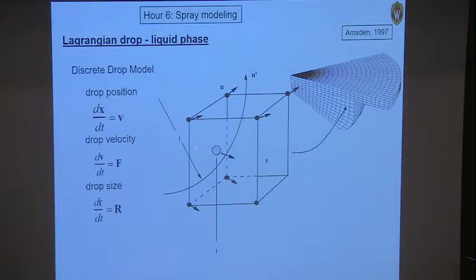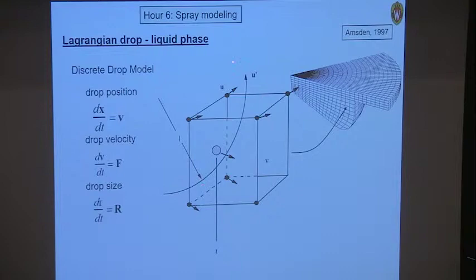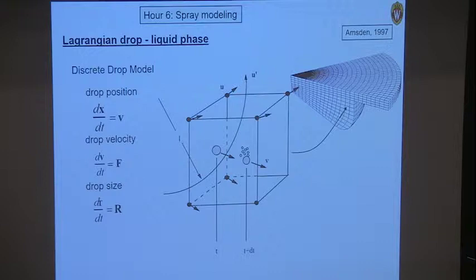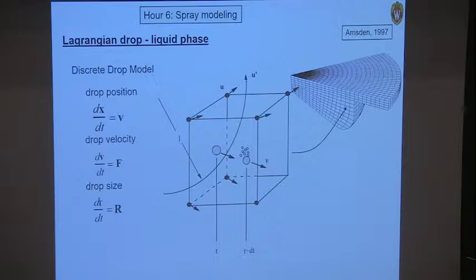For example, the droplet position changes with time according to the droplet velocity. So in a computational cell, here's my droplet moving at velocity v, encountering turbulence eddies of length scale l and fluctuation velocities u'. To advance to the next time level, I solve this ordinary differential equation — knowing the velocity of the particle, I calculate its new position. This is not just a single particle; it's a parcel full of droplets where each droplet has the same temperature, position, and velocity. I'm using a statistical trick to represent many, many droplets.